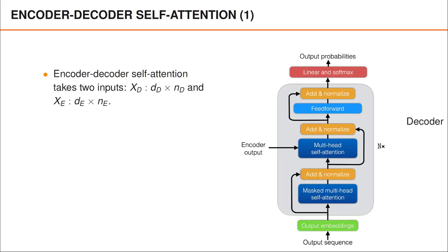The encoder-decoder layer we study in this video is the second self-attention layer in the decoder. It takes two matrices as input, where the first, here denoted capital XD, is provided by the earlier layers in the decoder, and the second, here denoted capital XE, is the output from the encoder.